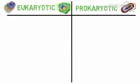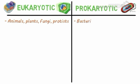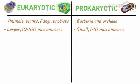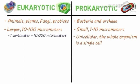Eukaryotic cells include animals, plants, fungi, and protists, while prokaryotes are composed of bacteria and archaea. Prokaryotic cells are generally small, 1 to 10 micrometers, while eukaryotic cells are larger, 10 to 100 micrometers. Prokaryotes are unicellular, whereas eukaryotes can be multicellular like plants and animals, or unicellular like phytoplankton and protozoa.